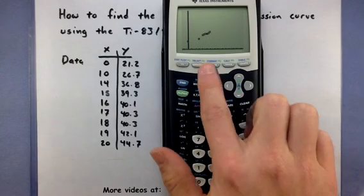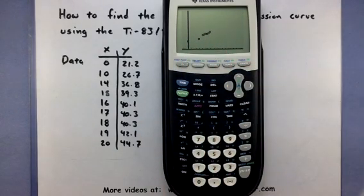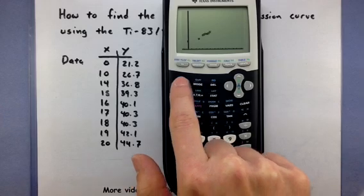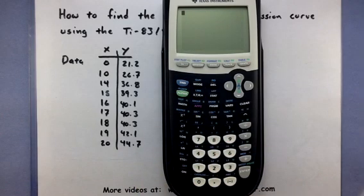There we are. So there are all of these data points. Now to make that regression line, we're going to go back to our home screen and basically see that process in action. So go ahead and press second quit. And this is our home screen.